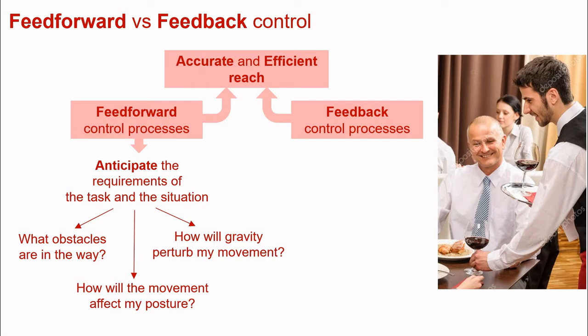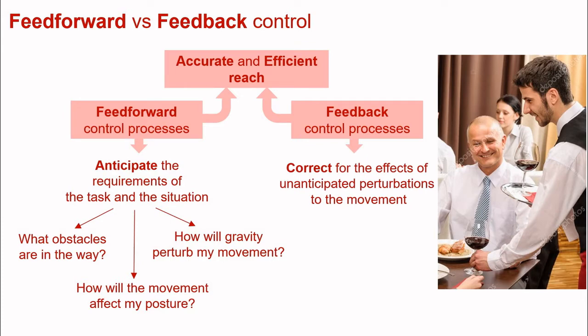On the right-hand side of the screen, we can see a waiter who has just taken a glass off his tray and placed it on a table — a particularly rich example. As soon as the waiter takes the glass off the tray, he's effectively perturbing himself and also affecting his ability to use his other hand to manipulate the wine glass. A feedback control process is the ability to correct the effects of an unanticipated perturbation — for example, if the waiter accidentally picked up a glass that was full rather than empty, there would be a surprising unanticipated change in weight.